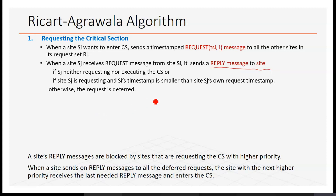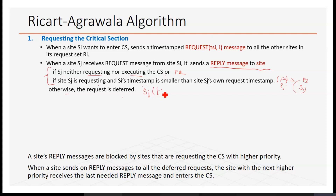When site SJ receives a request message from SI, it sends a reply message under certain conditions. Unlike Lamport's where it replies to all requesting sites, here SJ sends a reply if it is neither requesting nor executing the CS, or if SJ is requesting but SI's timestamp is smaller than SJ's timestamp. Otherwise, the request is deferred.